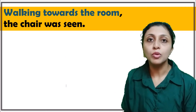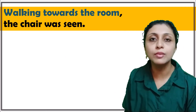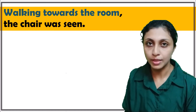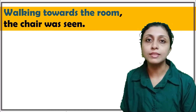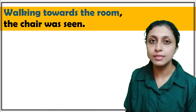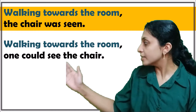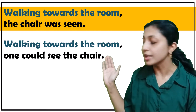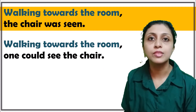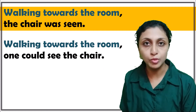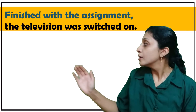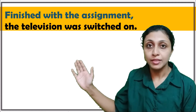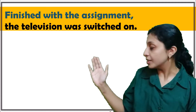To avoid this floating participle and make the sentence clearer, you can rewrite it as: 'Walking towards the room, one could see the chair.' This makes much more sense.